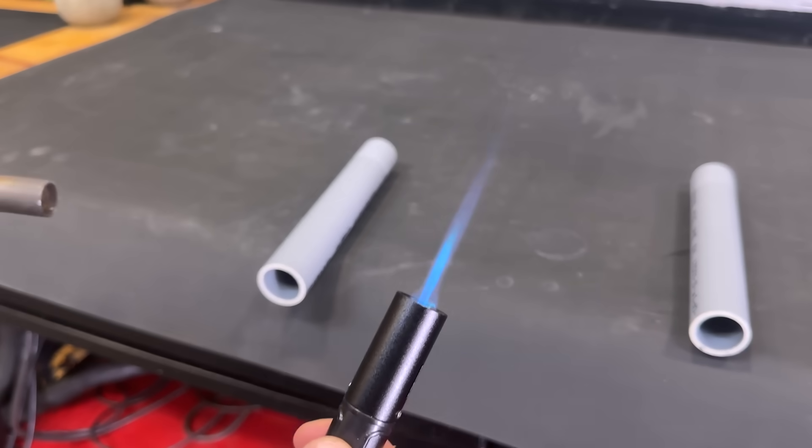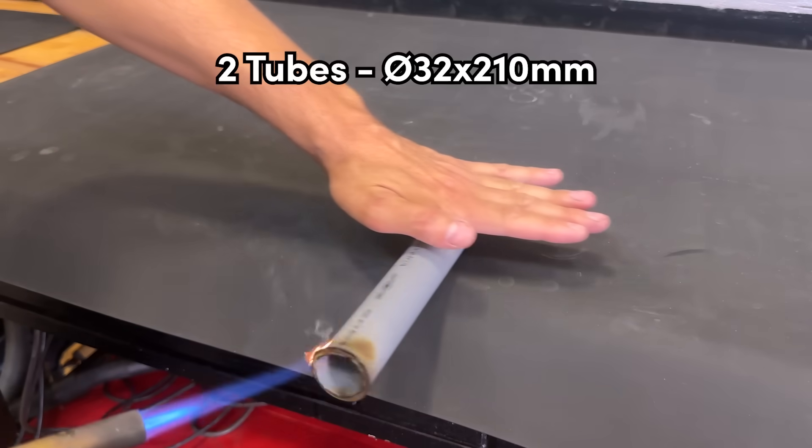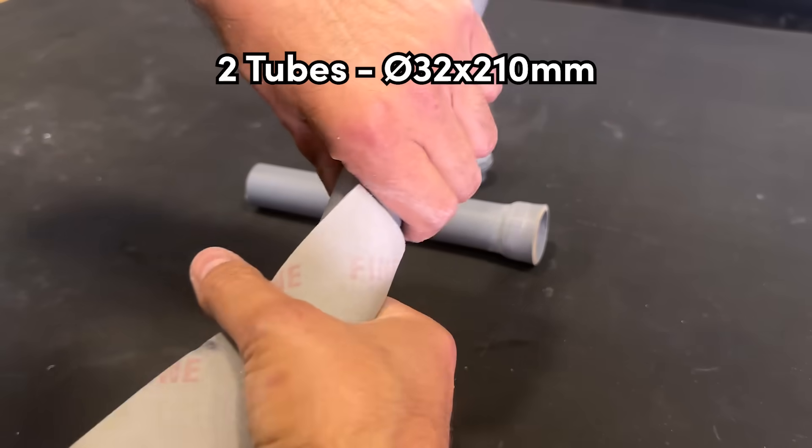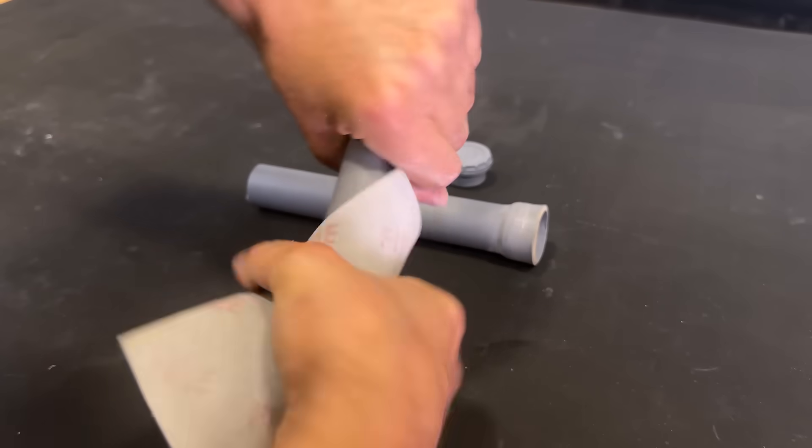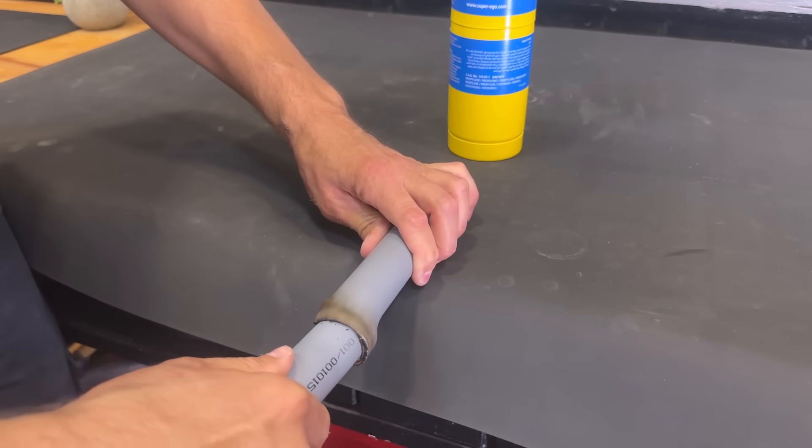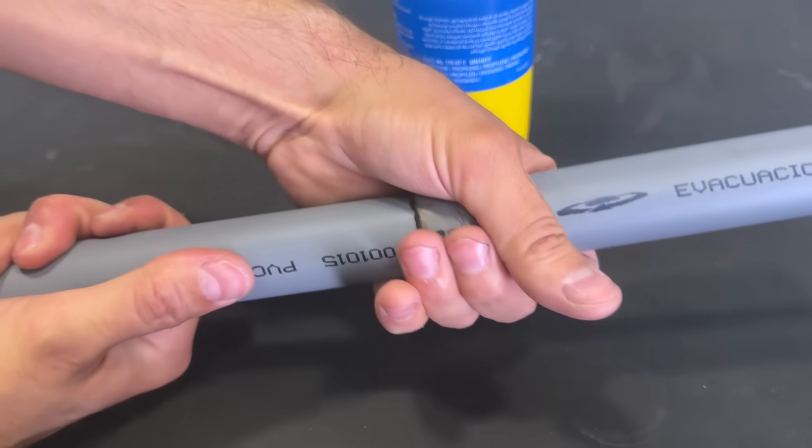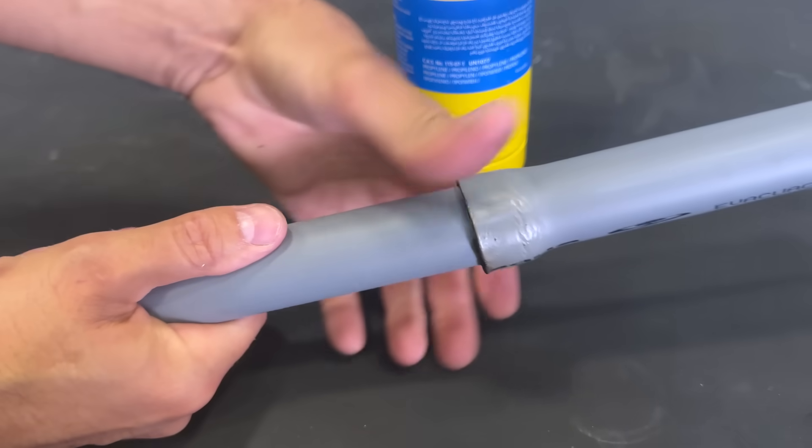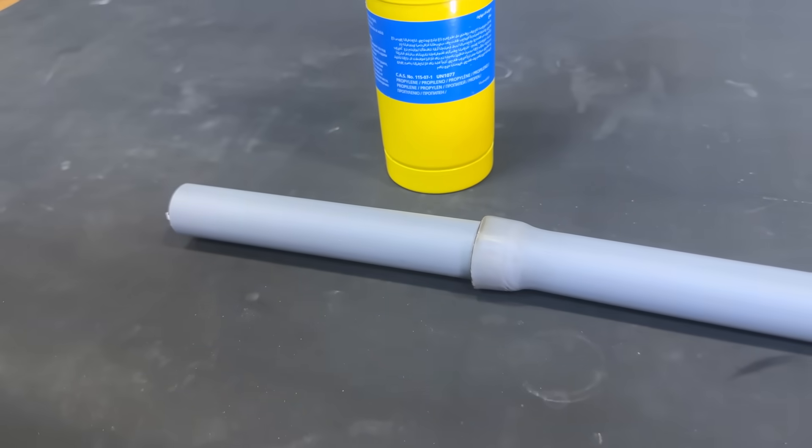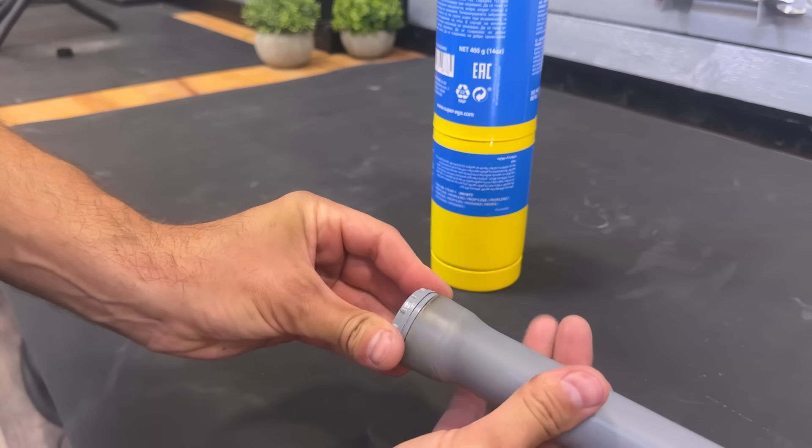We continue heating and expanding one end of each of these 32 for 210 millimeter PVC pipes. As we did before, we insert one end into the other to expand it to the correct size. When the pipe cools, we check that the plug fits perfectly.